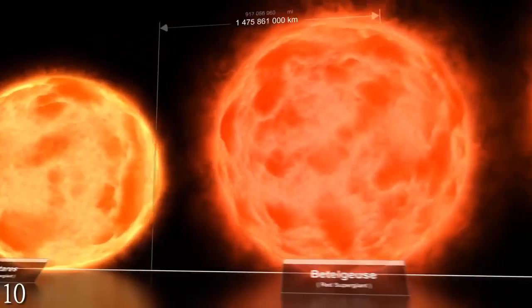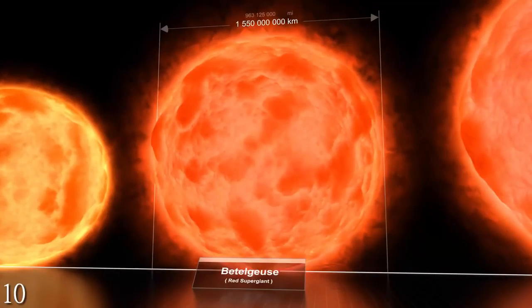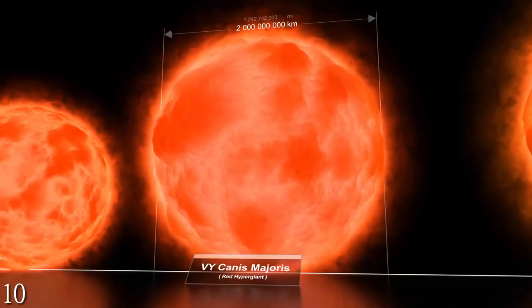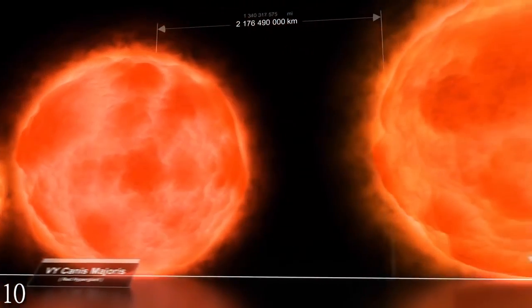Betelgeuse, 300 times larger than Etta Carinae. If it were our Sun, it would reach as far out as Jupiter. And then there's UY Scuti, the largest star that we know of.